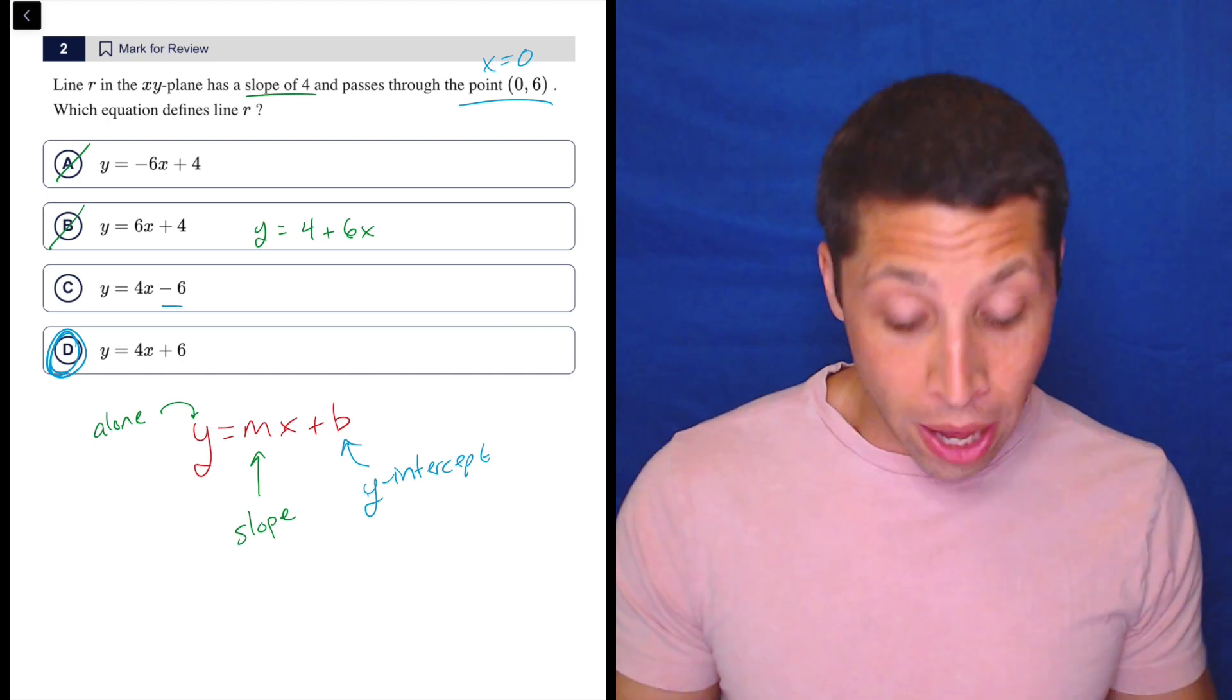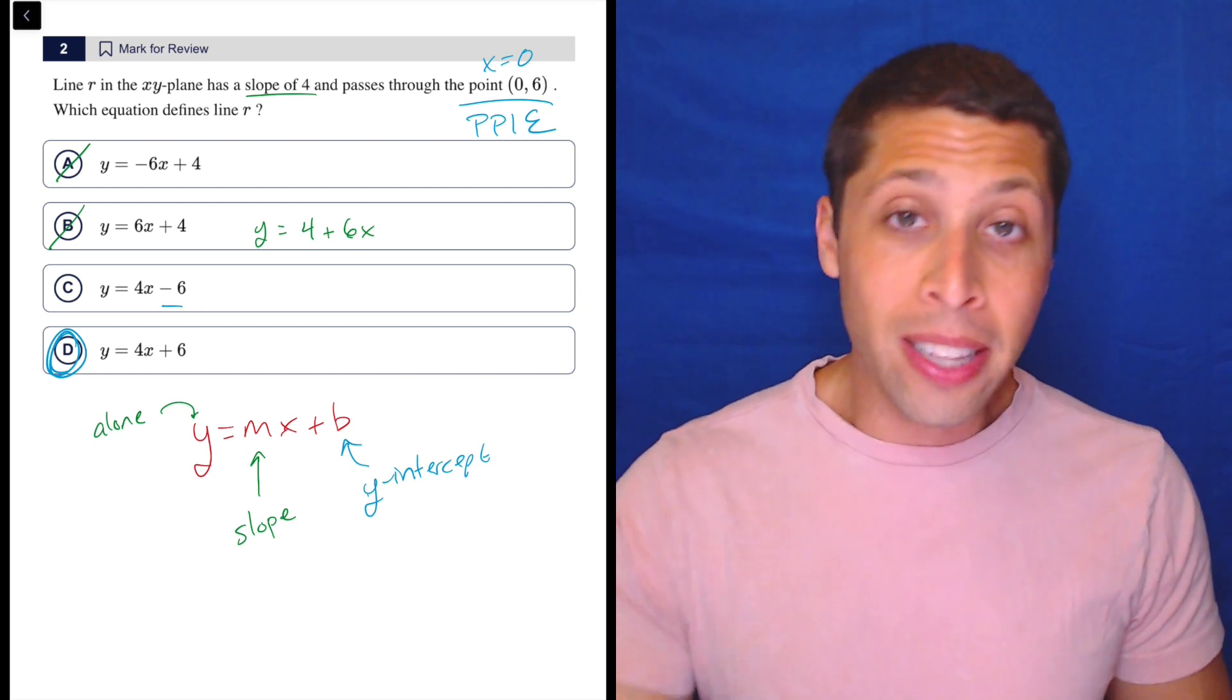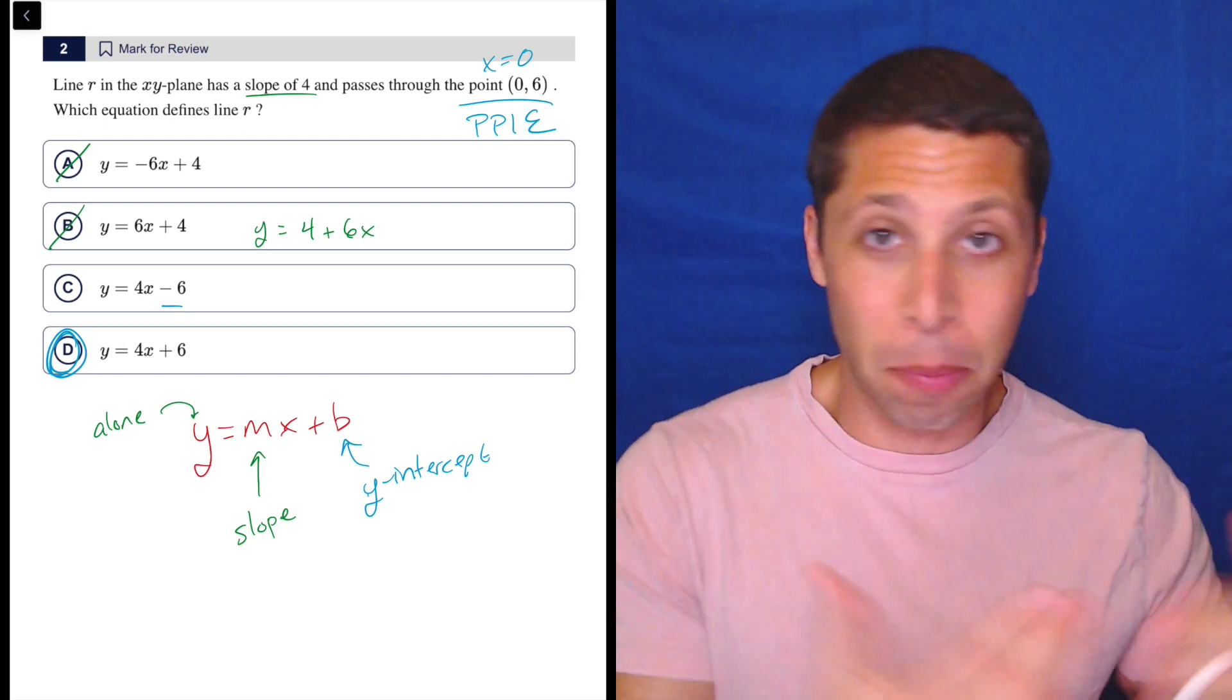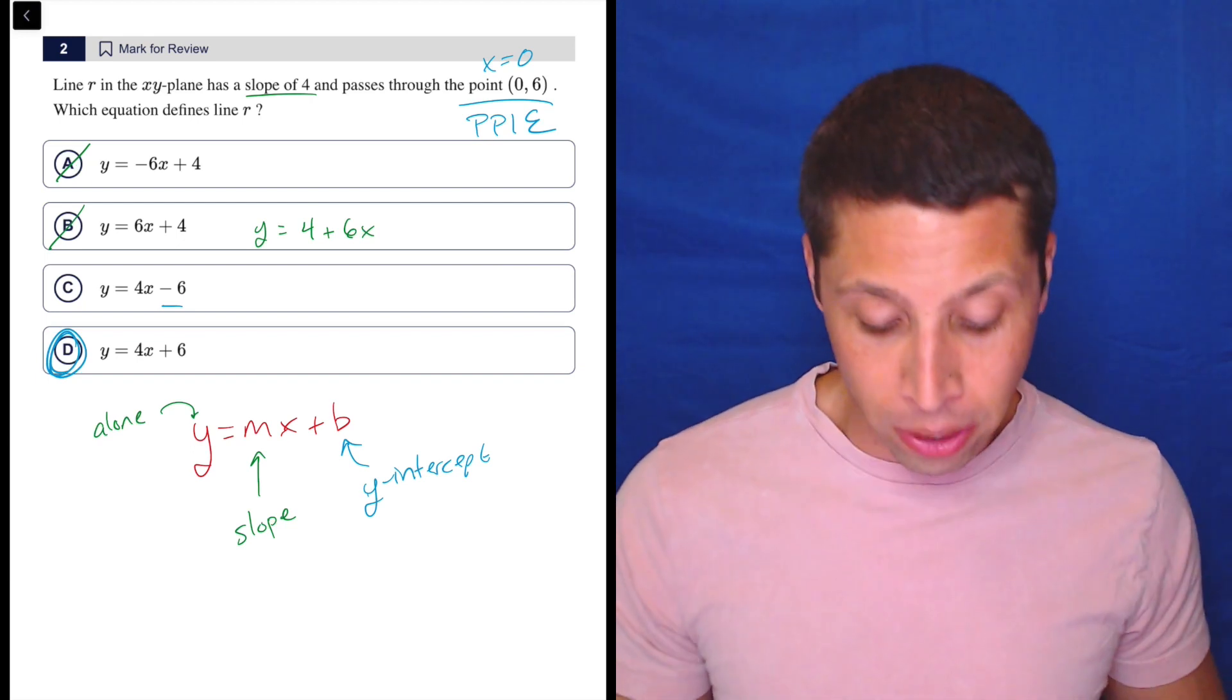Now, if you didn't know that though, remember, just use our main strategy, plug points into equations. And the reason that the b, the y-intercept, is this piece at the end is that the 0 for x is going to wipe that component out.